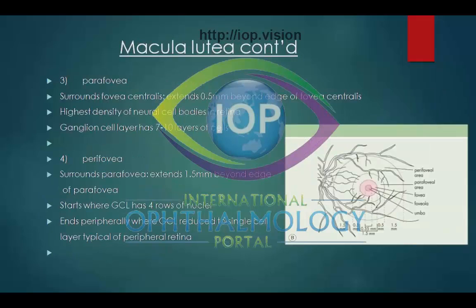The parafovea surrounds the fovea centralis and extends 0.5 mm beyond the edge of the fovea centralis. It has the highest density of neural cell bodies in the retina and has a ganglion cell layer which is 7 to 10 cell layers thick.